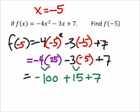And I hope I got that part right, because that seemed like the easiest part. Negative 100 plus 15 plus 7, so then I get negative 78. So f of negative 5 equals negative 78.